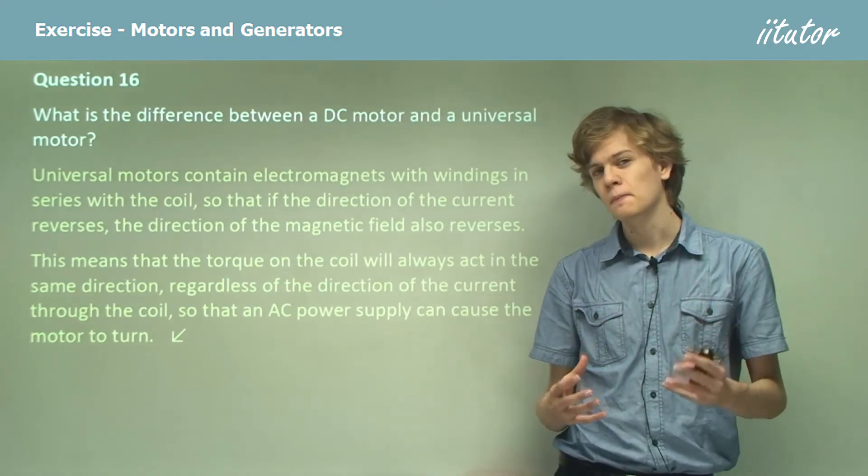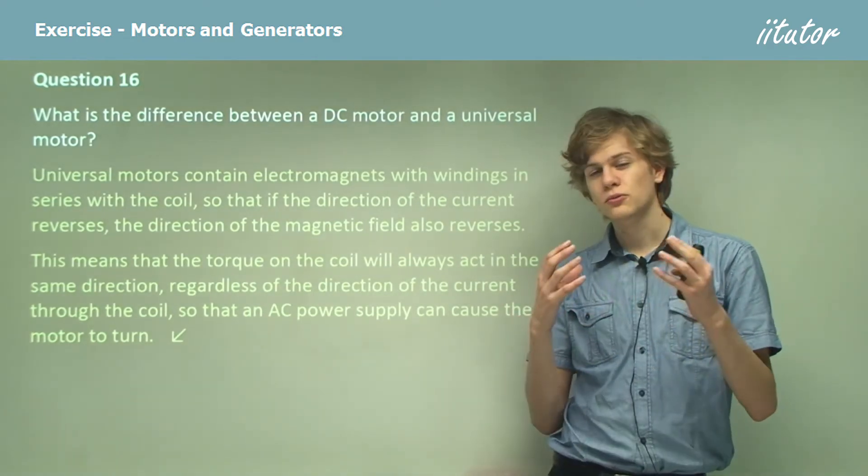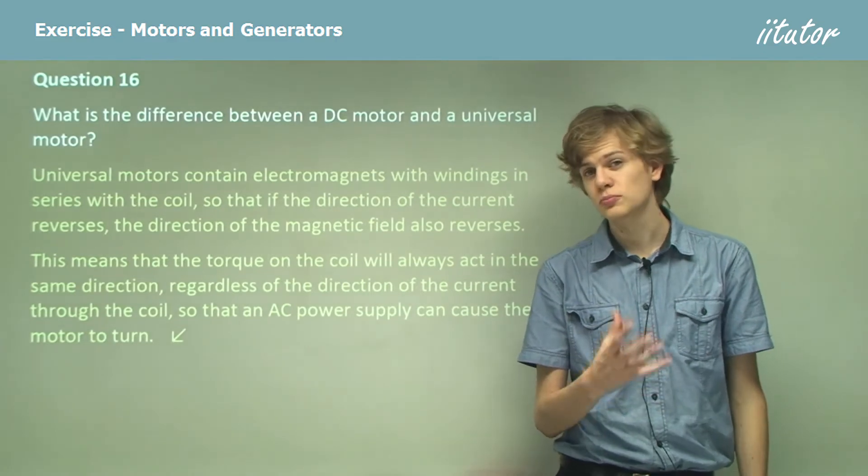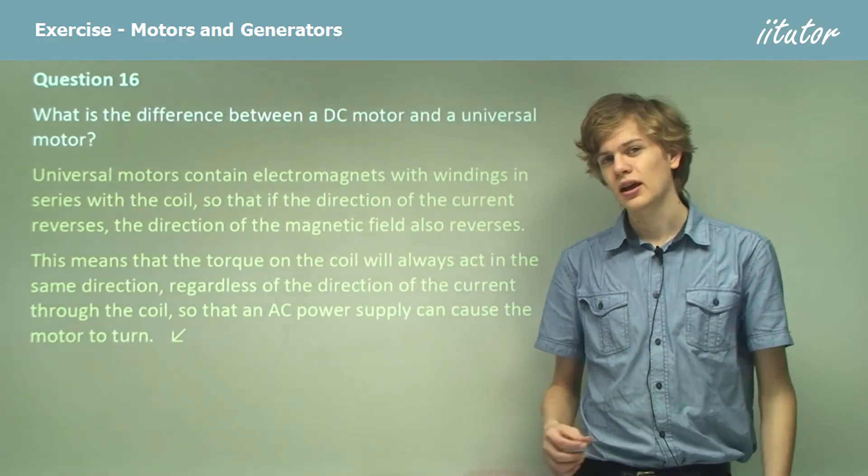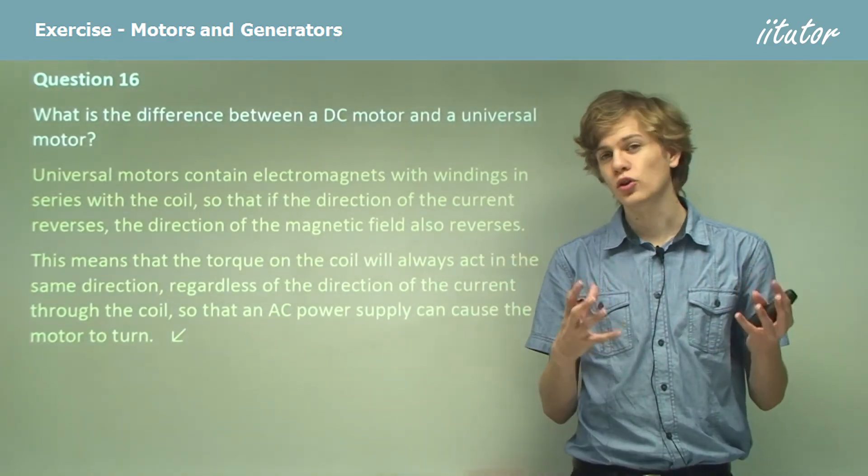If we have a DC power supply, then the current will only pass through the coil in one direction, due to the split ring commutator. And the magnetic field will always point in one direction.